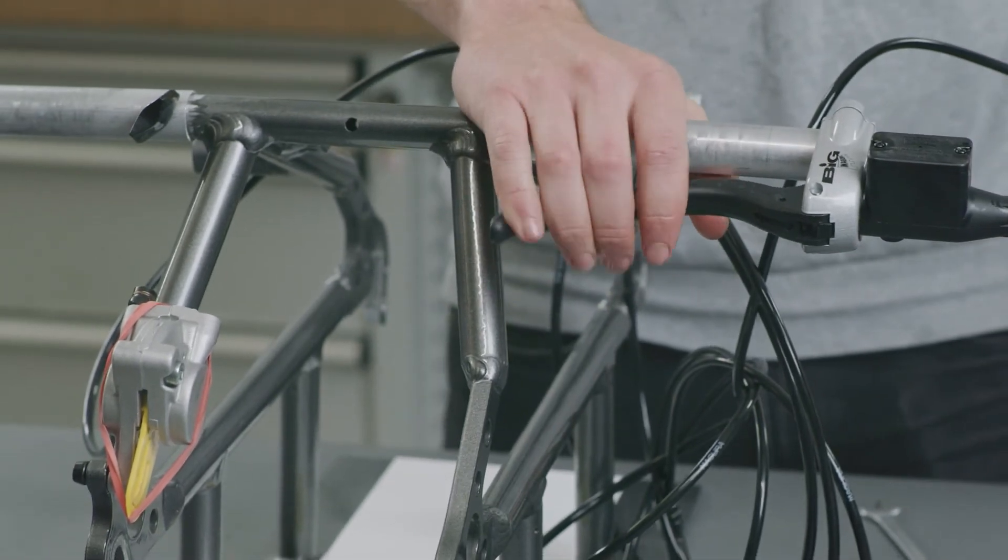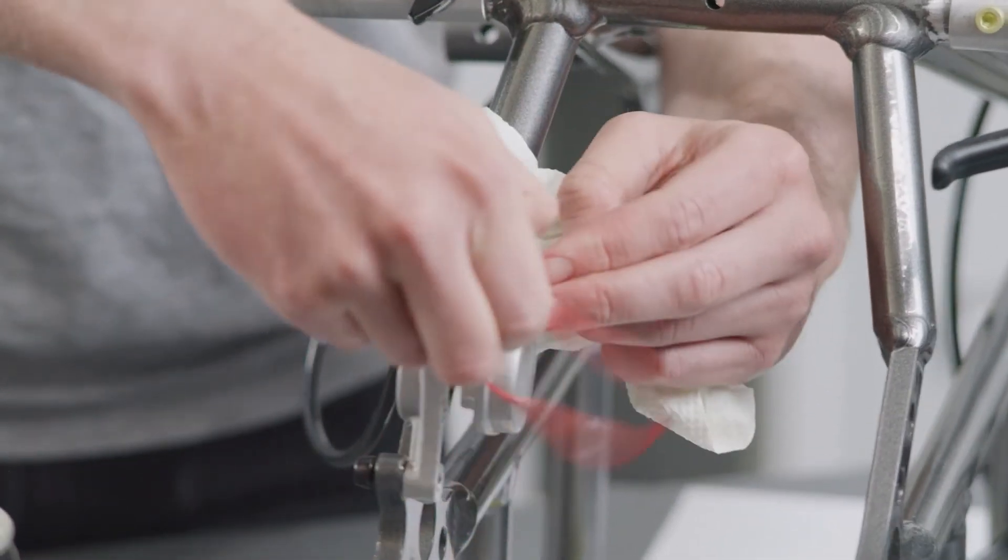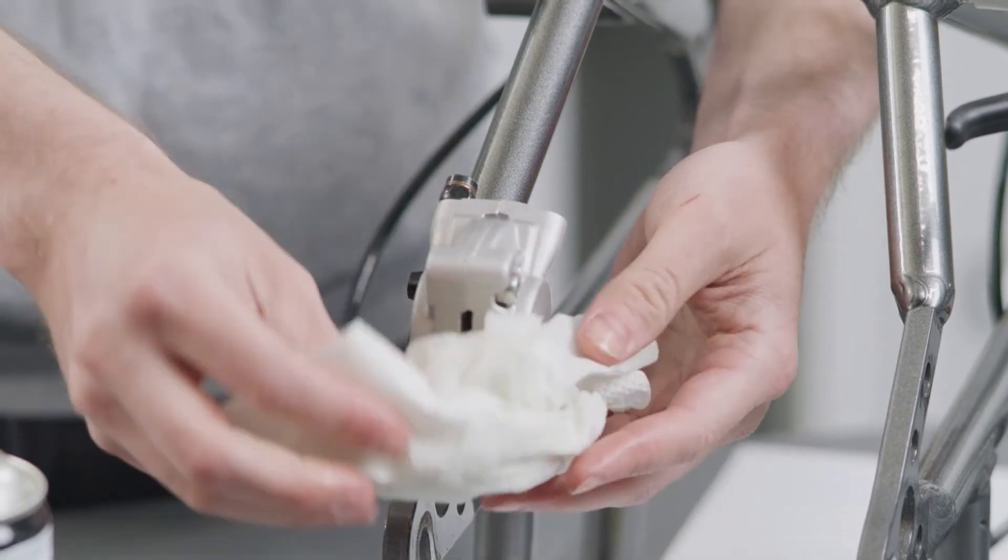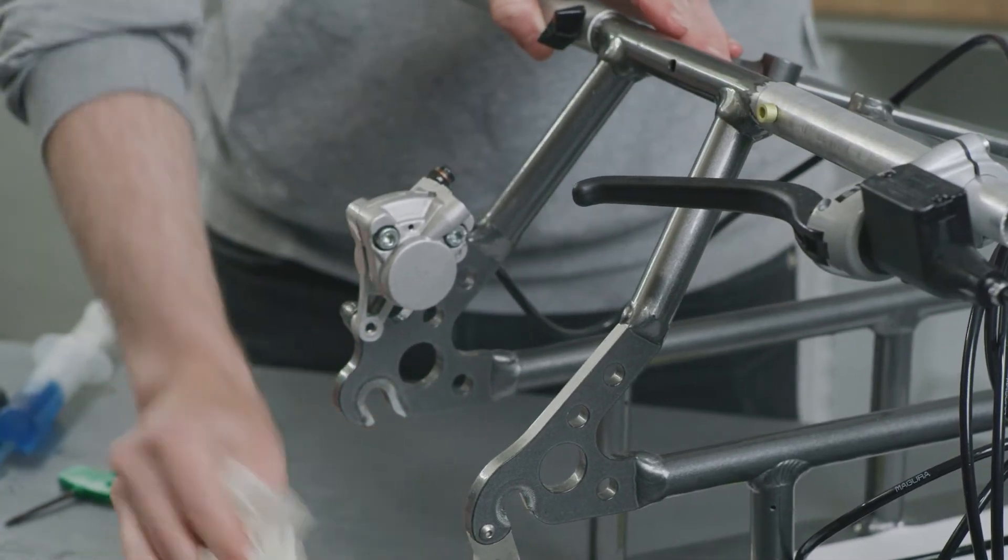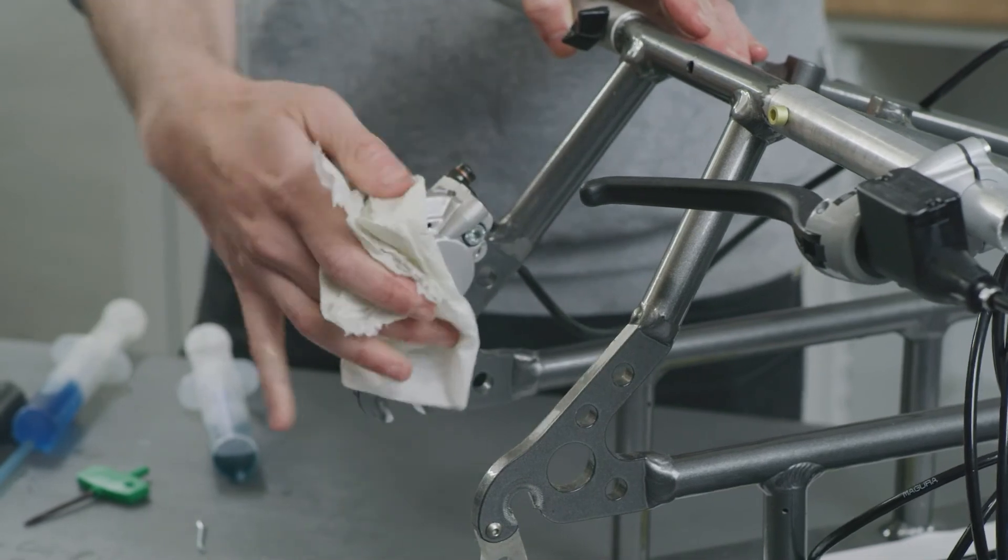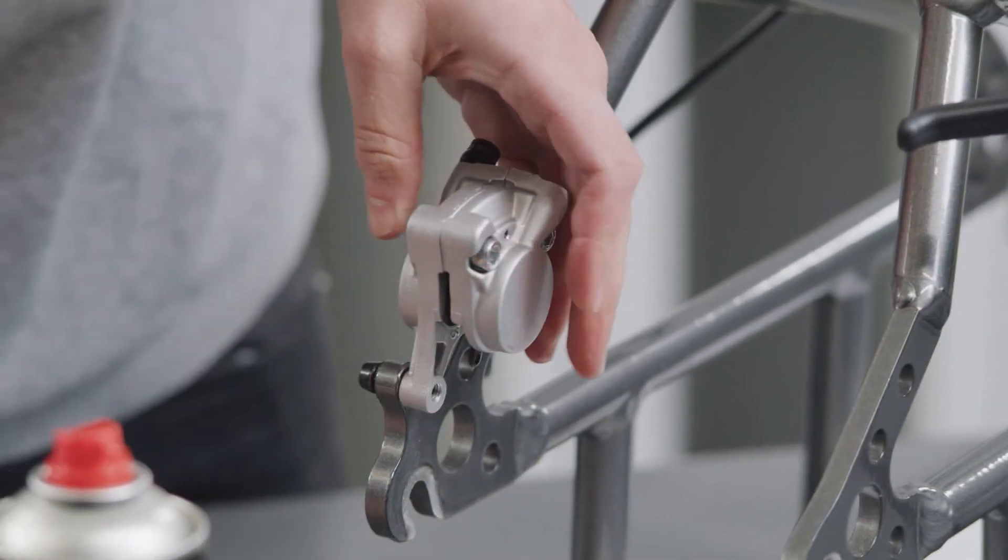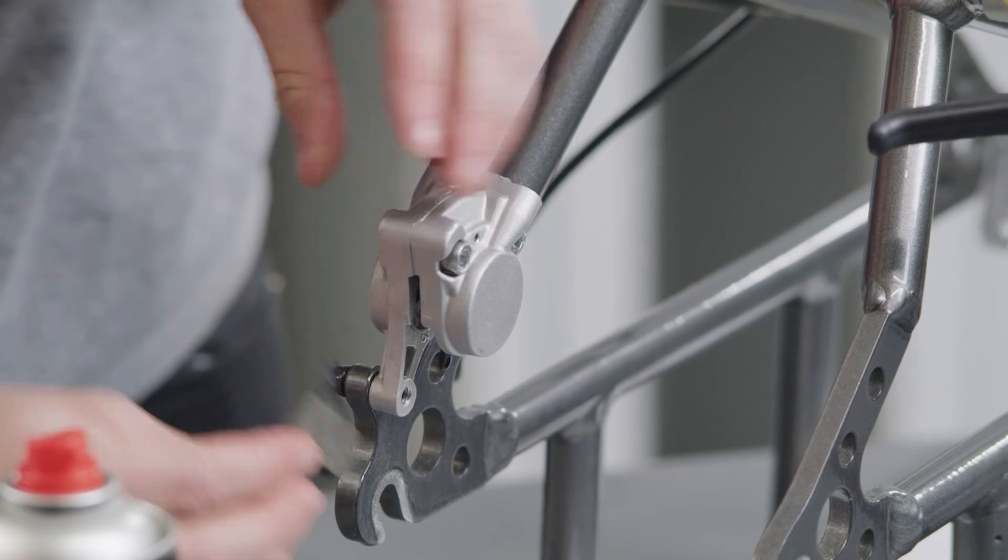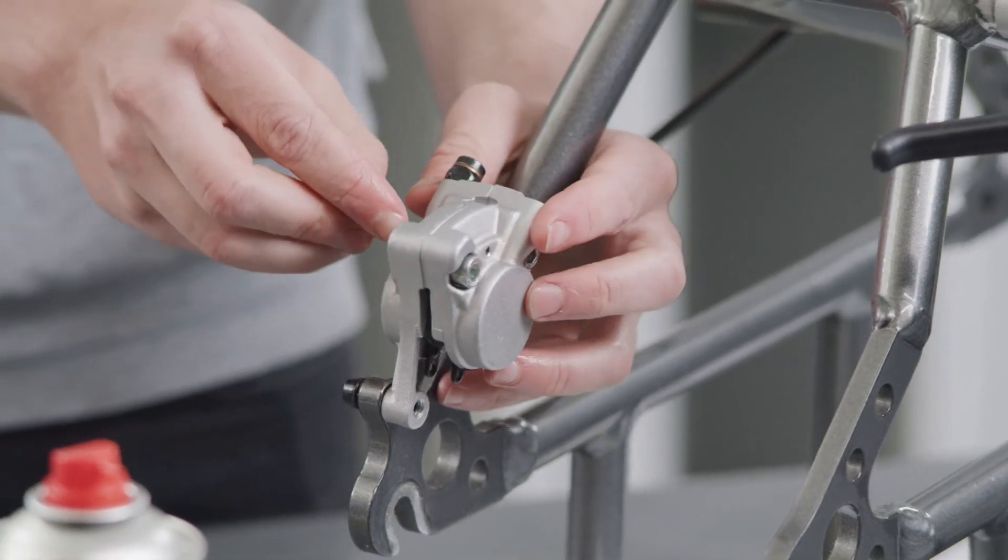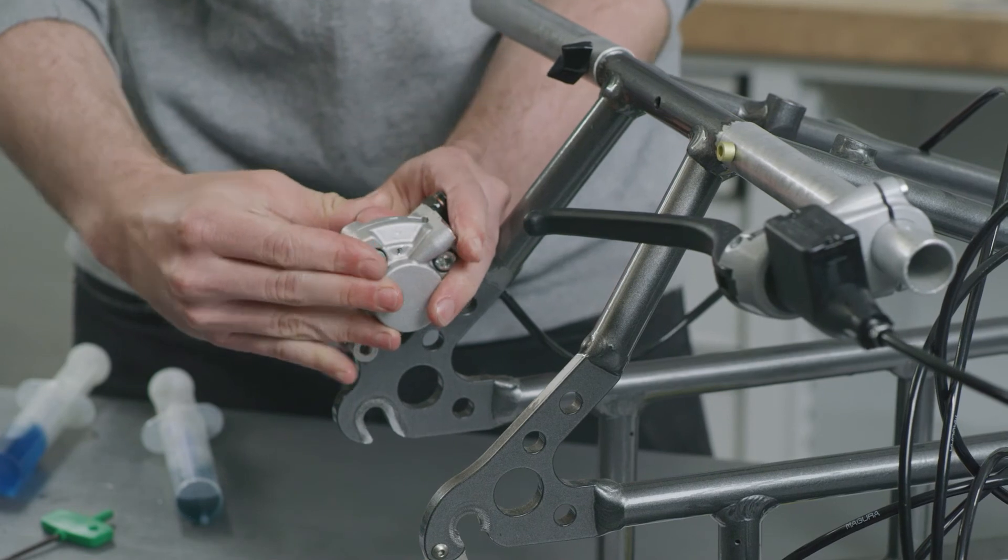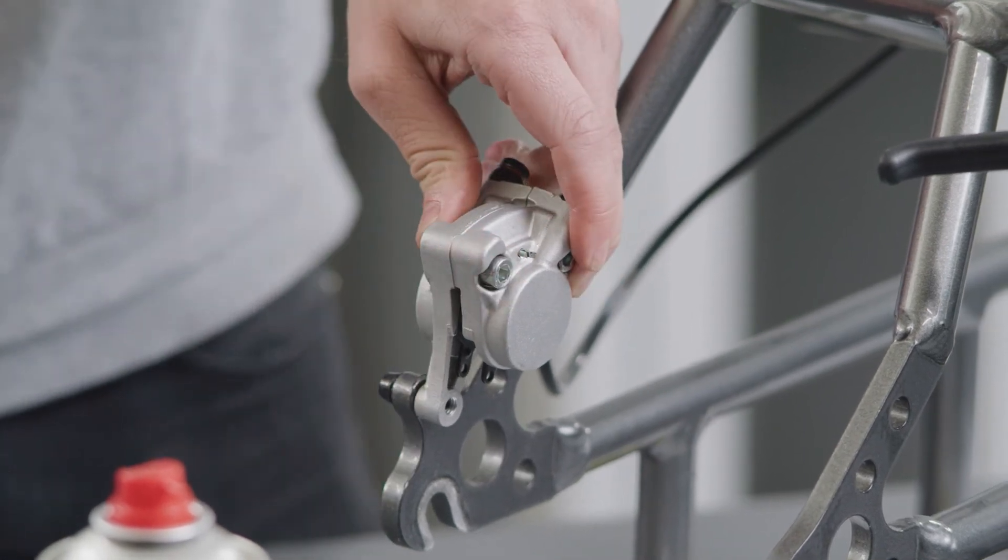Check the bite point before you continue. Now, remove the transport retainers from both brake calipers. Clean everything thoroughly and mount the pads. Finally, install the securing pins on both brake calipers and make sure they sit securely. Check that the brake works properly and does not leak.